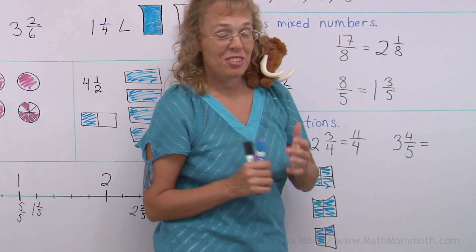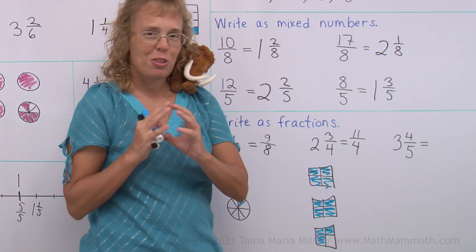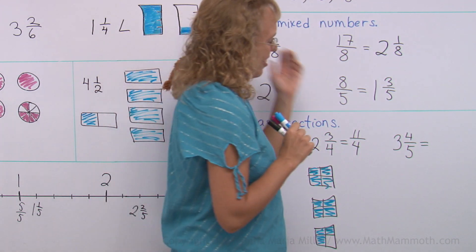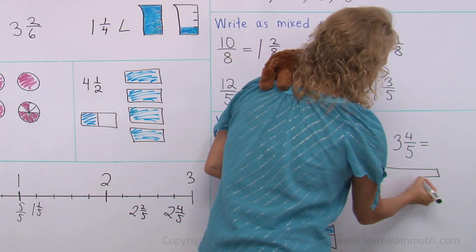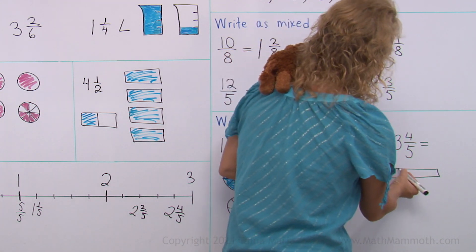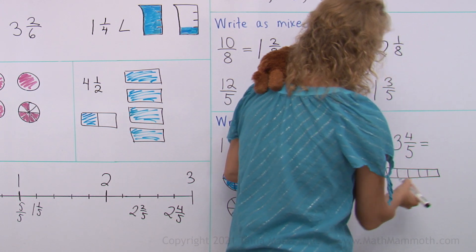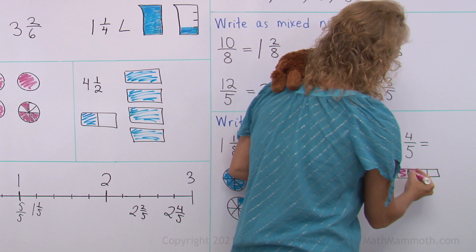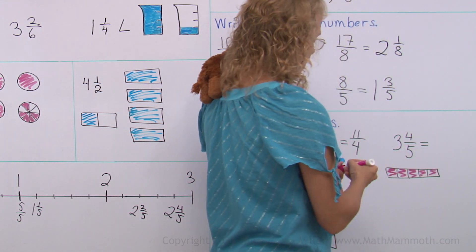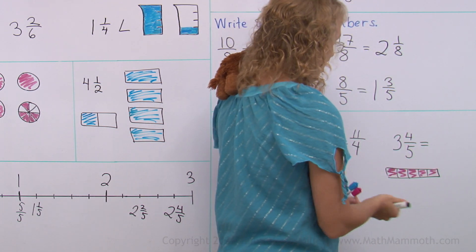Last one. Can you figure that one out? Maybe you want to draw on your paper. 3 and 4 fifths. You know, if I have one whole and it's divided into 5 parts, I would have 5 fifths. It's 5 fifths. Then draw another, and another.